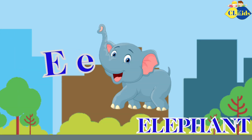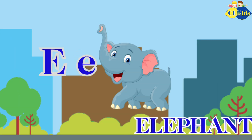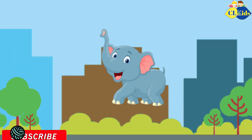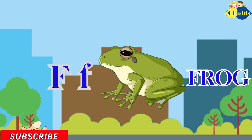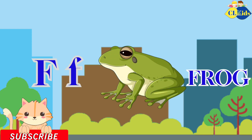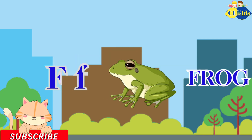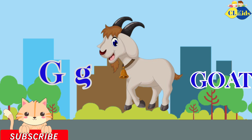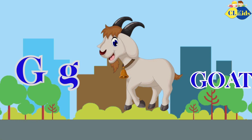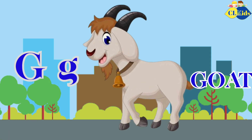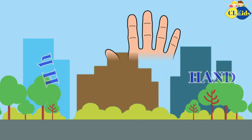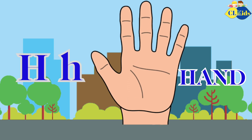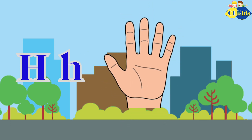E is for Elephant, E-E-Elephant. F is for Frog, F-F-Frog. G is for Goat, G-G-Goat. H is for Hand, Ha-Ha-Hand.